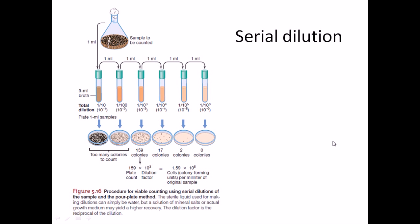Welcome back guys, we are talking about serial dilution in this video. Serial dilution is a very important method to dilute a sample. For example, if you want to culture a bacteria from a huge mixture or reservoir like soil, it is filled with many different types of bacteria.